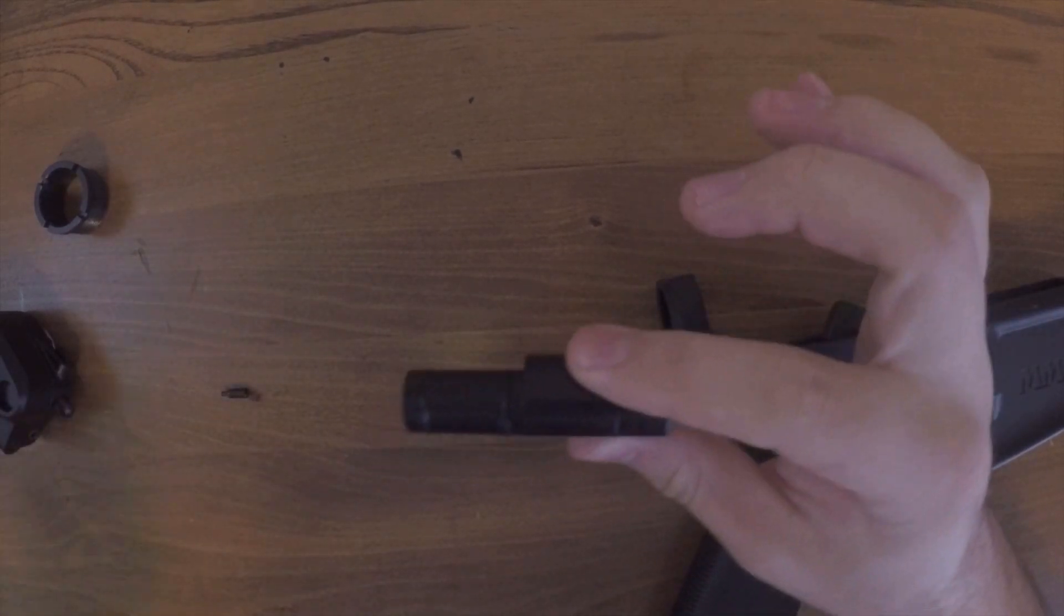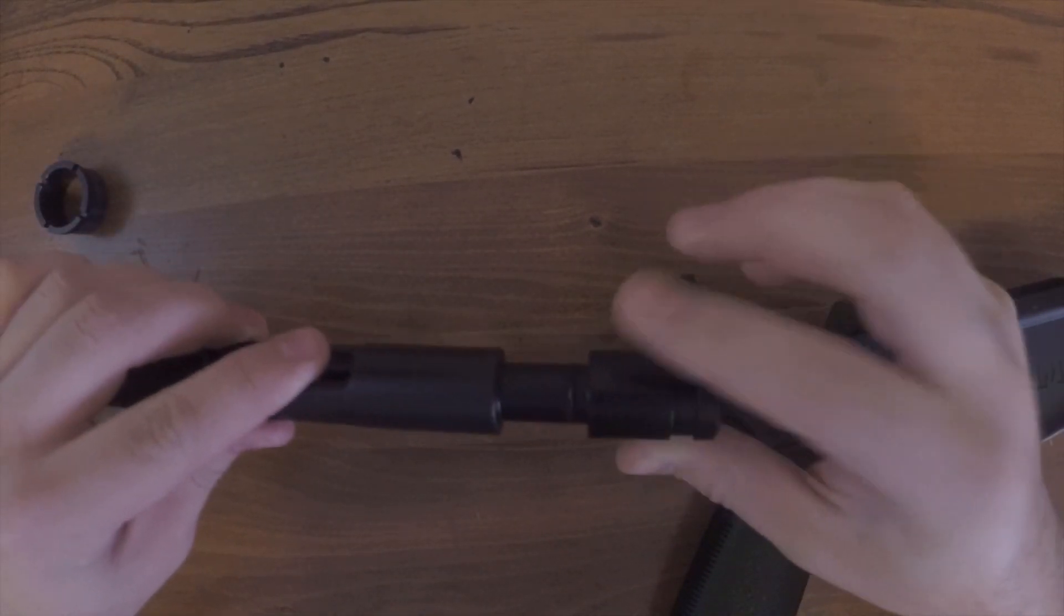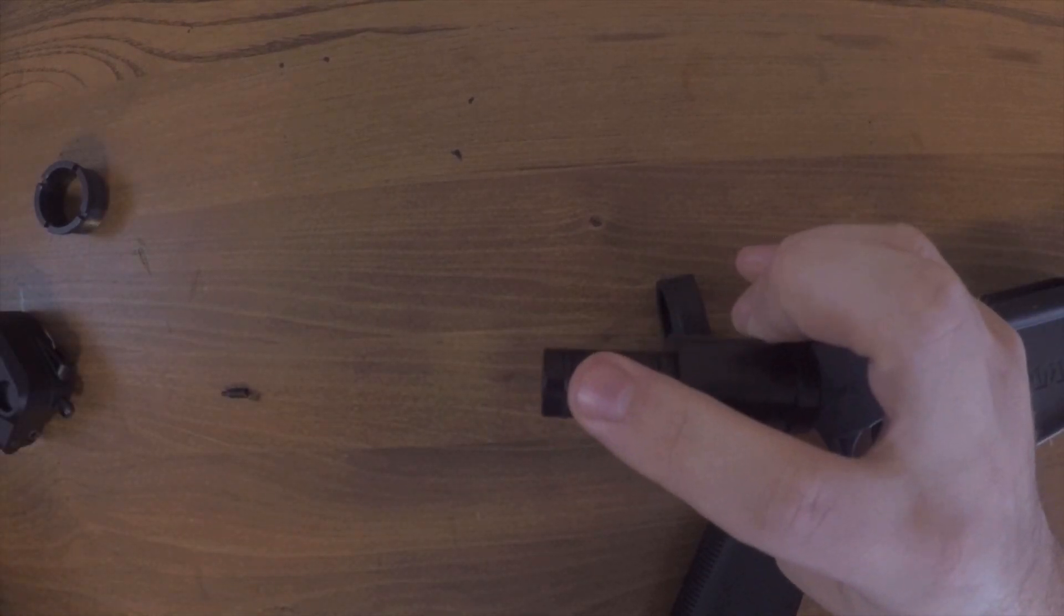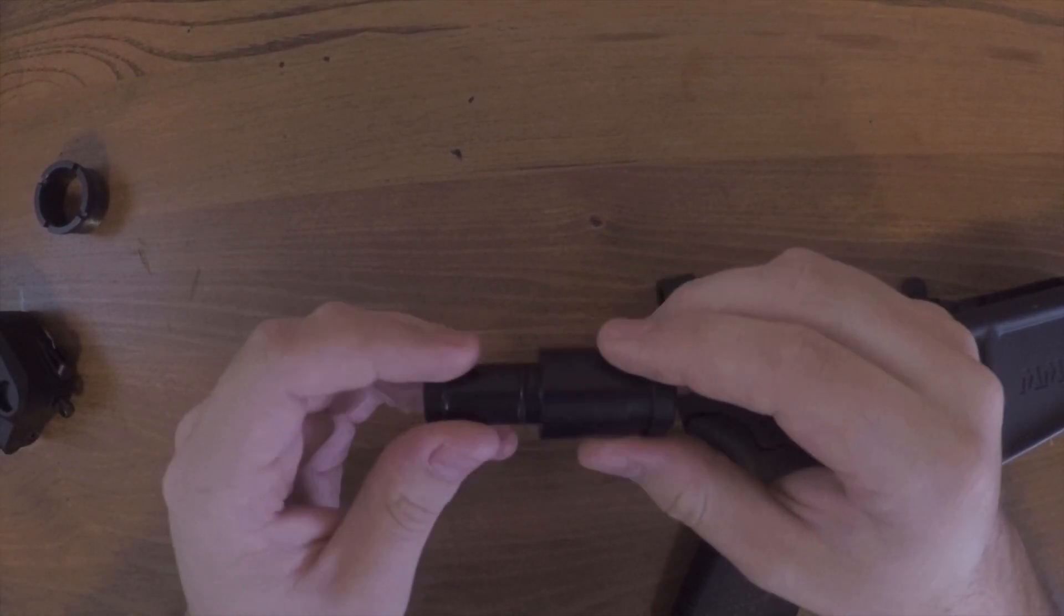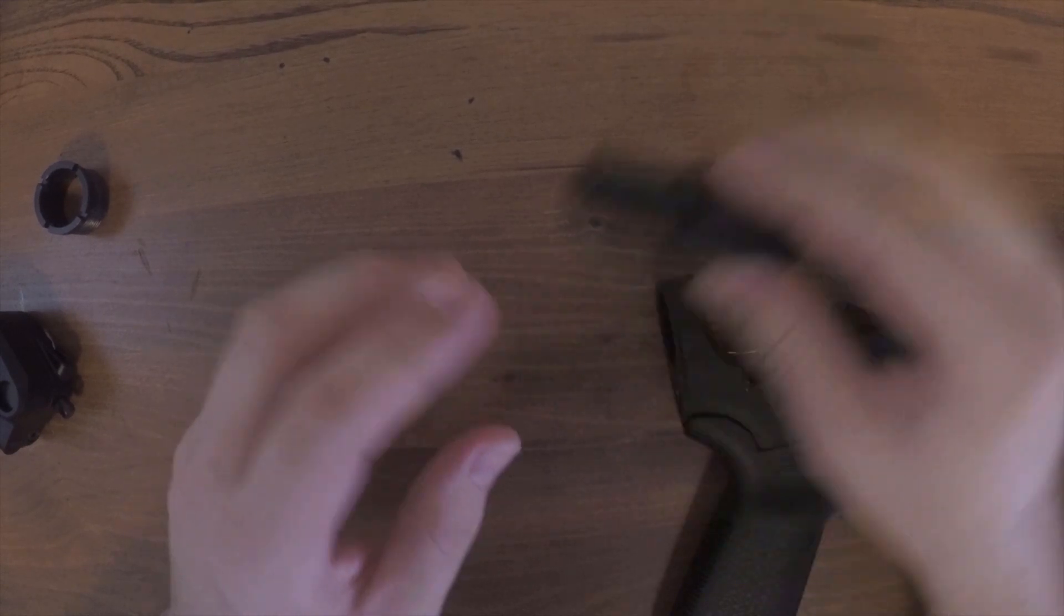The second issue is your bolt extension is too big to fit in your bolt. It's got these little O-rings that you remove, and you can grind this down, but it doesn't really work.